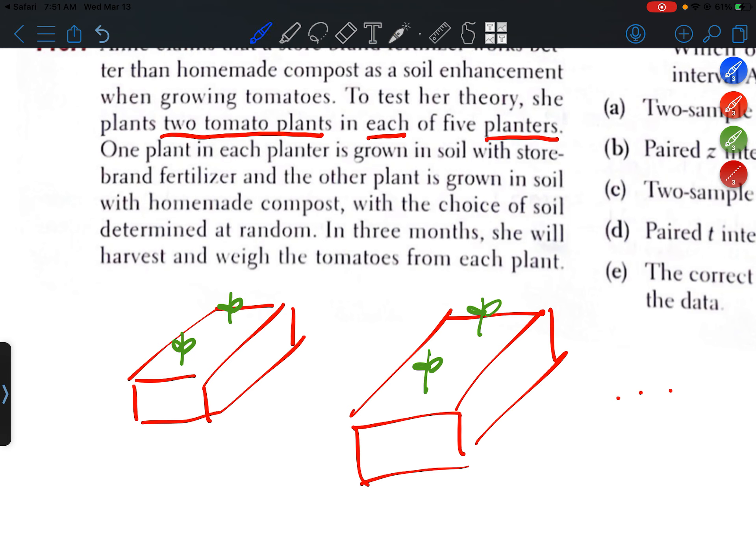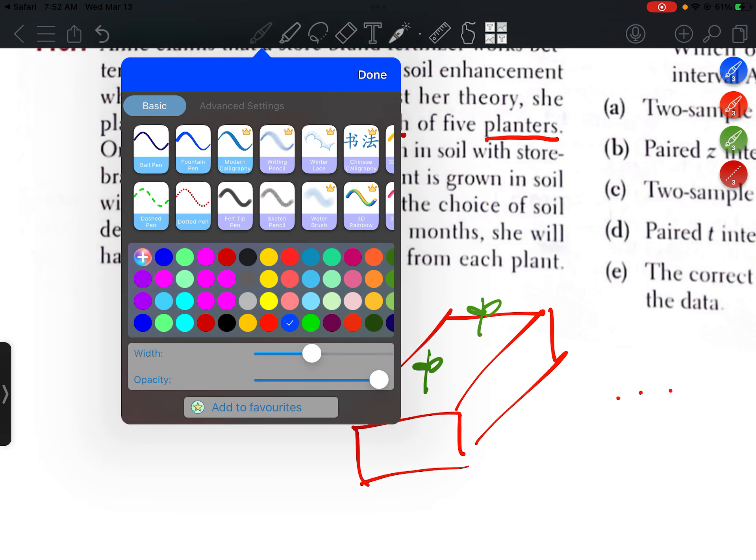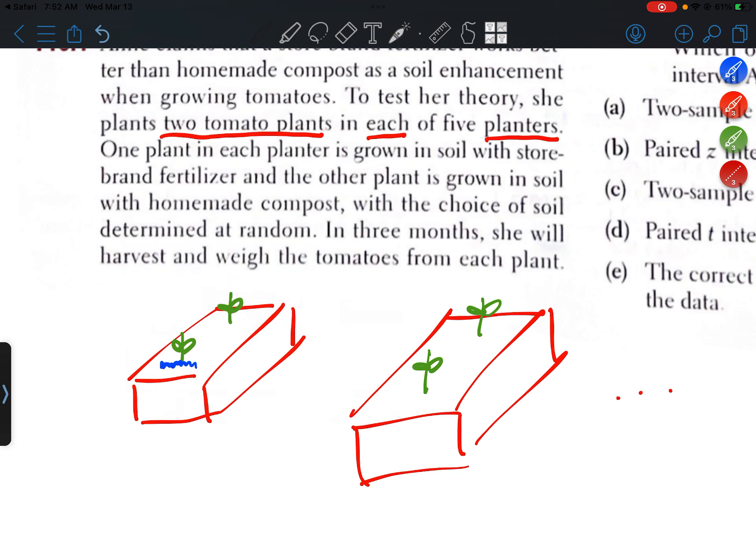Now one of the plants is going to be given the store-brand fertilizer, and the other plant will be given homemade compost. Okay, but the important thing here is that the plants are paired together.